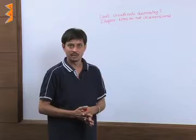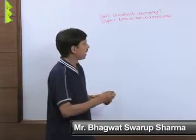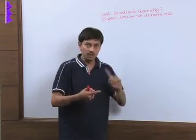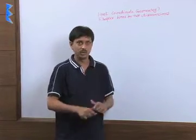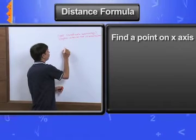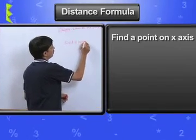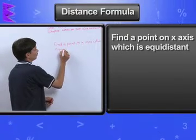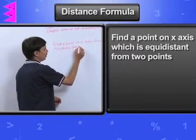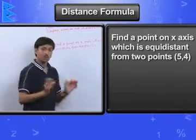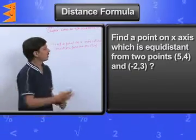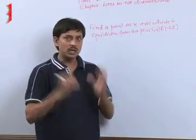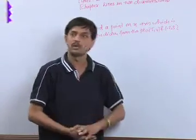Now, I will take one very important example based on the distance formula: find a point on the x-axis which is equidistant from two points. The question is: find the coordinates of a point on the x-axis which is equidistant from two points — (5, 4) and (-2, 3).